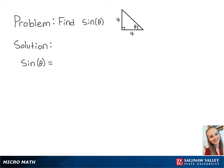For this problem, we're going to find sine of theta of the following right triangle. Sine of theta is equal to the opposite side length of the angle over the hypotenuse.